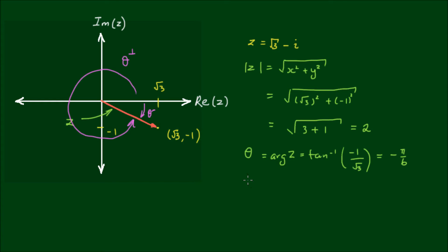Or if we wanted to express the positive value of θ, we could say that θ is equal to 2π minus π on 6, which is equal to 11π on 6.